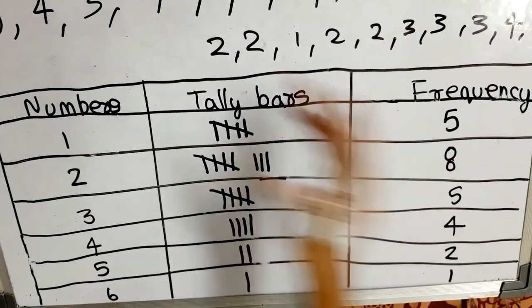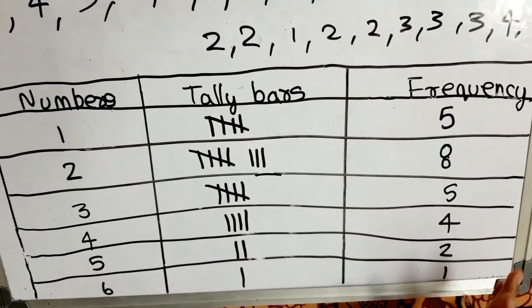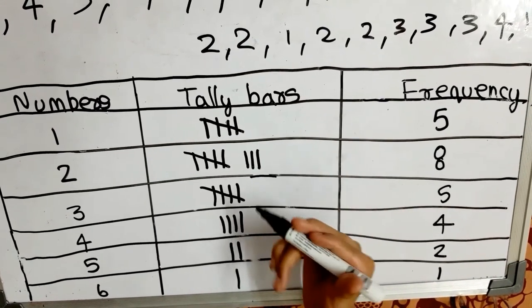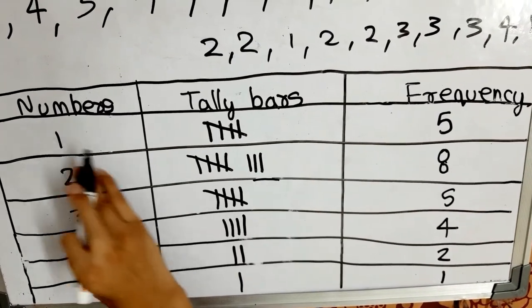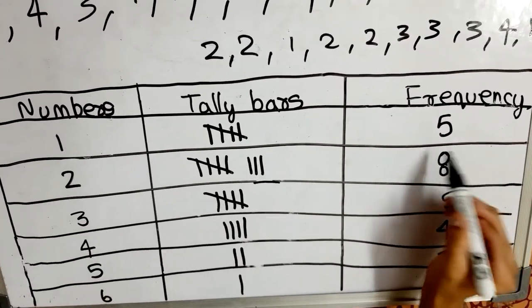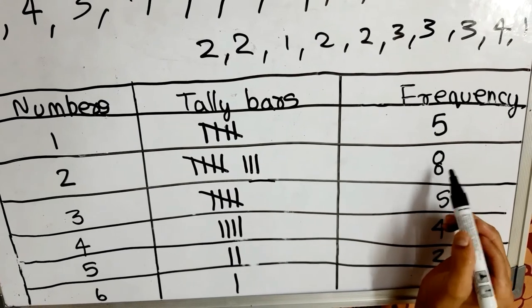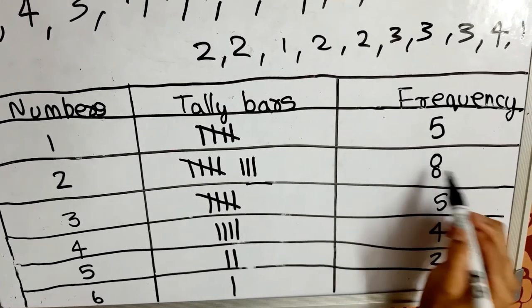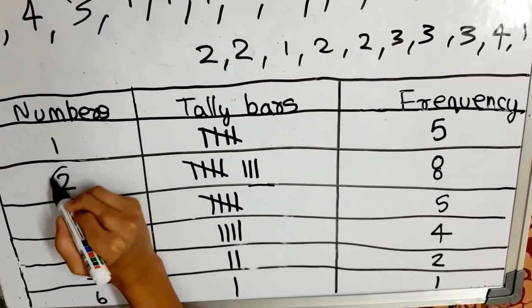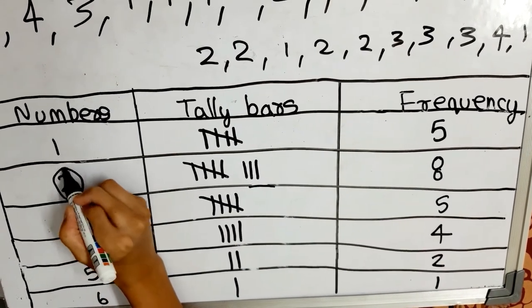By looking at this table, we can easily find out the mode. Here 2 occurs most frequently, which is 8 times. So 2 is our mode.